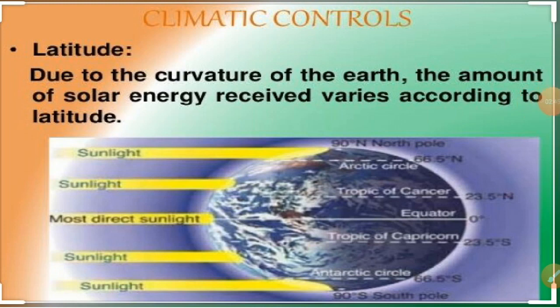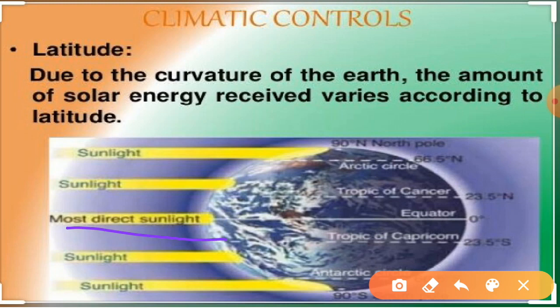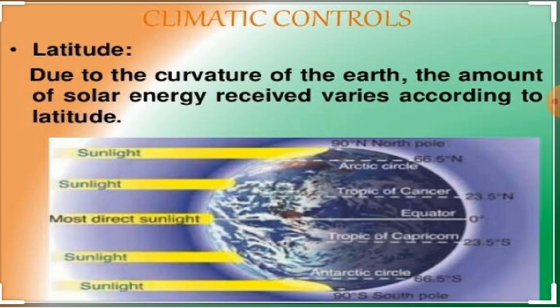First, latitude. On Earth, the equator region receives direct sunlight, so it has very hot temperature — this is called the torrid zone. Then, the Tropic of Cancer receives little slanting sun rays compared to the equator, and this is called the temperate zone, which is also called the tropical region. Due to the curvature of the Earth, the amount of solar energy received varies according to the latitude.